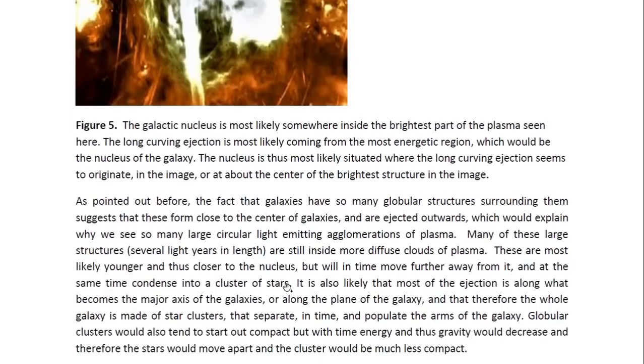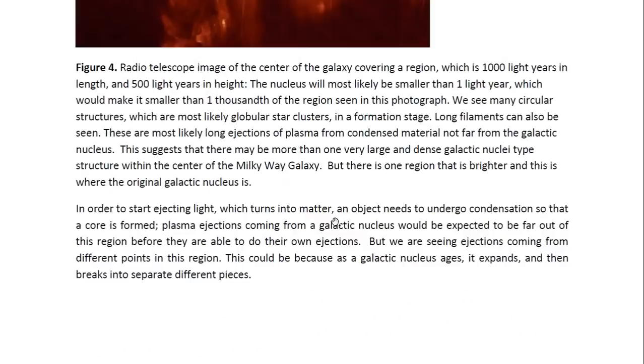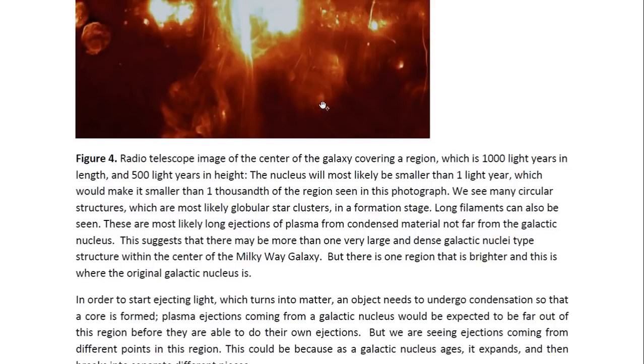As pointed out before, the fact that galaxies have so many globular structures surrounding them suggests that these form close to the center of galaxies and are ejected outwards, which would explain why we see so many large, circular, light-emitting agglomerations of plasma. Many of these large structures, which would be several light years in length, are still inside more diffuse clouds of plasma. These are most likely younger and thus closer to the nucleus. These denser agglomerations are most likely globular structures and will turn into globular clusters, but they are still within plasma that must have come from the center of the galaxy, from the galactic nuclei there.